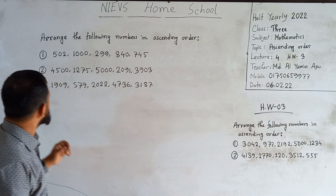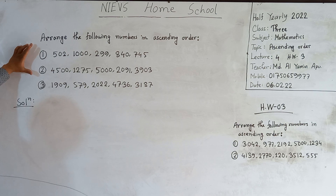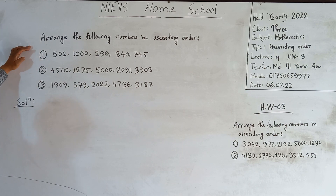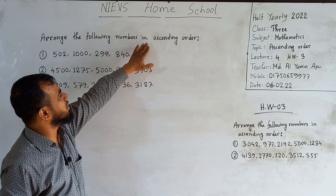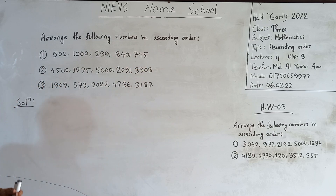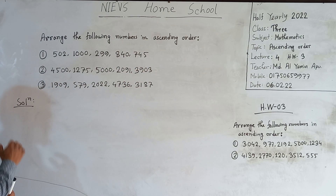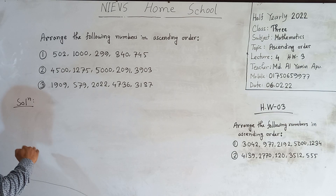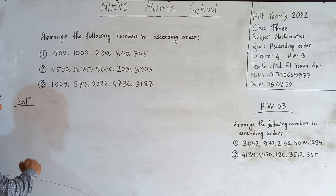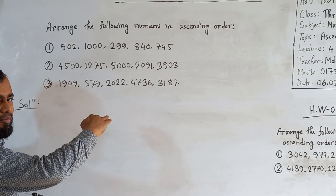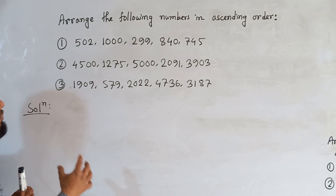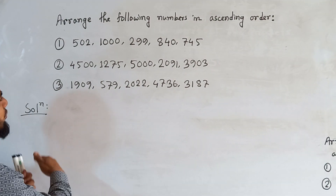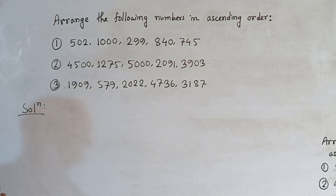Let's start our class. We need to solve three questions today. The question is: arrange the following numbers in ascending order. Ascending order means we should start from the lower number and go to the upper number — that means from the smallest number to the greatest number. From smaller to greater is called ascending order.